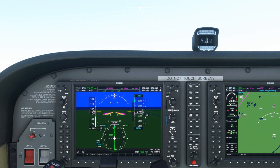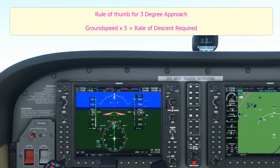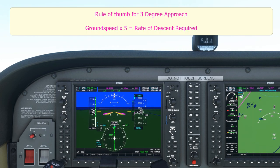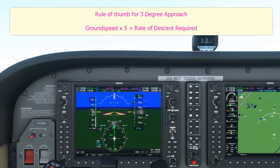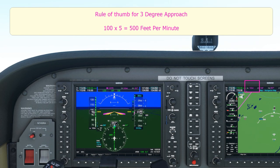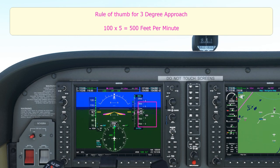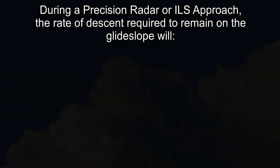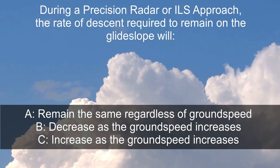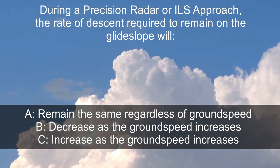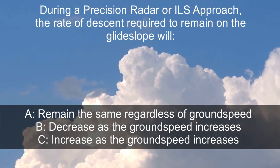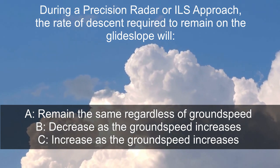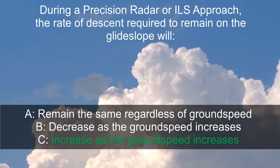A good rule of thumb to calculate the rate of descent required for a 3 degree approach is to take the ground speed and multiply it by 5 — this gives you the rate of descent in feet per minute to maintain a 3 degree glide path. So with a ground speed of 100 knots, multiplied by 5, that's 500 feet per minute. To answer the question: during a precision radar or ILS approach, the rate of descent required to remain on the glide slope will C — increase as the ground speed increases.